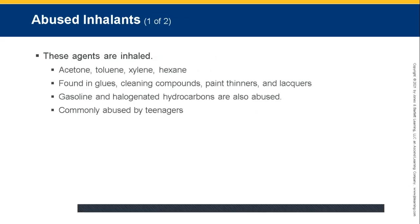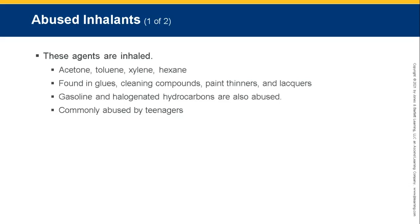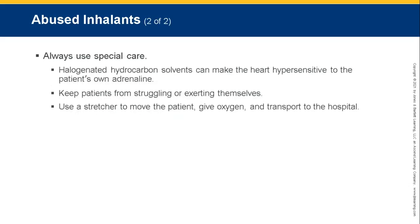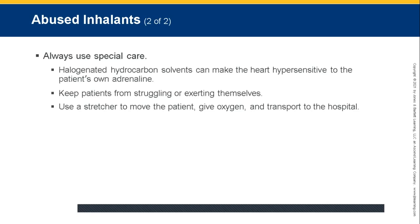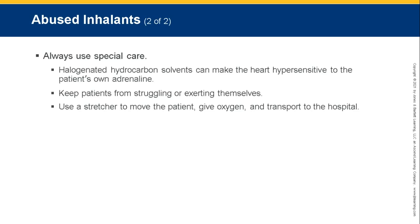Abused inhalants include acetone, toluene, xylene, hexane found in glues, cleaning compounds, paint thinners, and lacquers. Gasoline and halogenated hydrocarbons are also commonly abused, particularly by teenagers. Halogenated hydrocarbon solvents can make the heart hypersensitive to its own adrenaline — keep patients from struggling or exerting themselves. Use a stretcher to move the patient, give oxygen, and transport to the hospital.